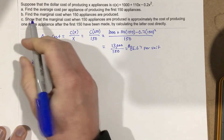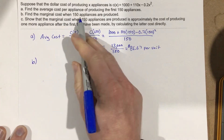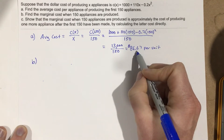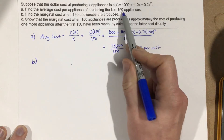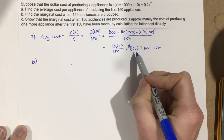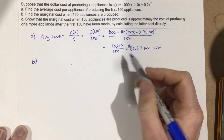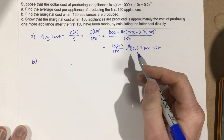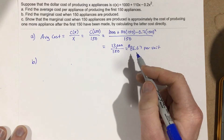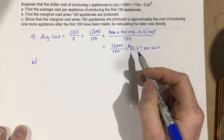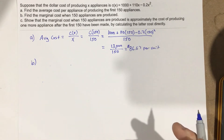For part B, they want to find the marginal cost when 150 appliances are produced. As you produce more and more units at a factory, the cost per unit decreases. Why? Because the higher the production rate, the easier it is to buy supplies and essentially make those appliances cheaper — you can buy the stuff and mass produce it.